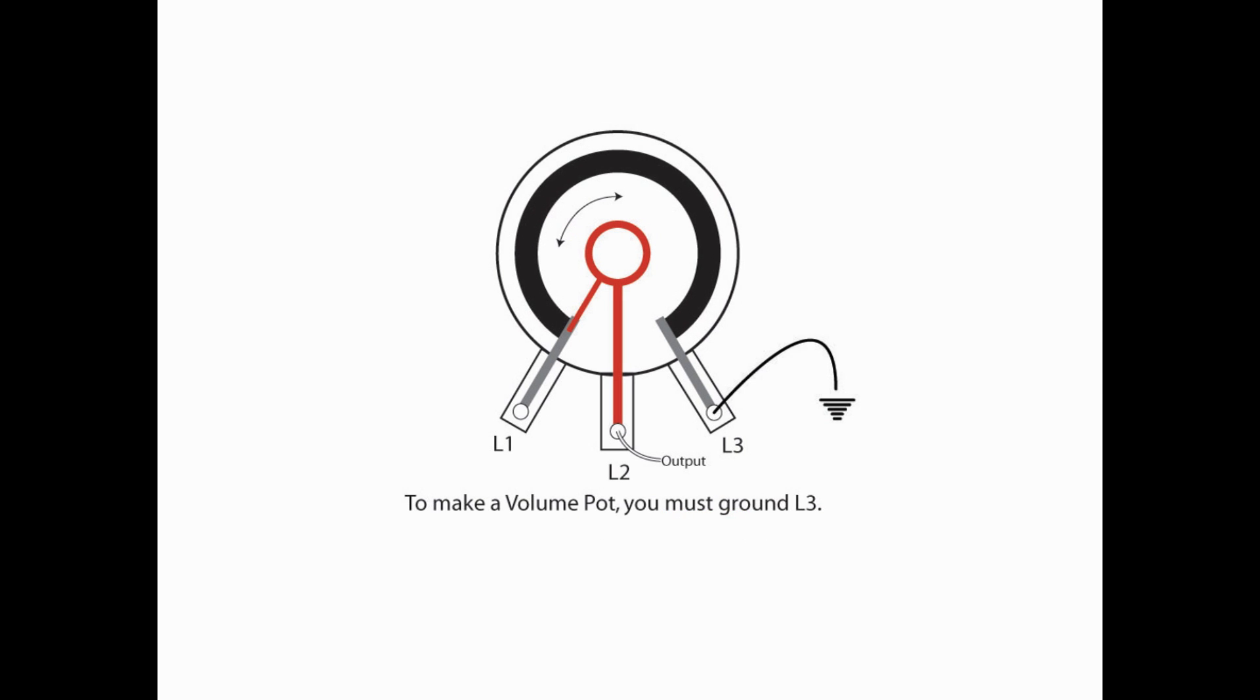Now, to turn a pot into a volume pot, we have to ground L3. We're going to use L2 as our output. So anytime you've opened up your guitar and you've done this, you know that your volume pot, we always ground the lug L3 to the top of the pot, and our L2 is our output to our output jack. So now, let's take a look at why we do that, and what is the effect when we turn that knob.